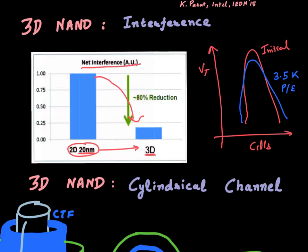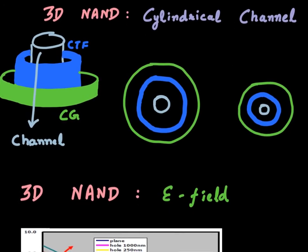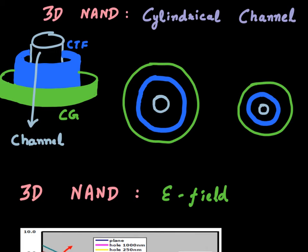Now I want to point out one of the unique features of 3D NAND electrostatics. The 3D NAND cell is essentially cylindrical in nature — you have a cylinder defined at the top by your control gate and at the bottom by your polysilicon channel, and in between you have the charge trap flash layer, which is essentially a silicon nitride based dielectric.